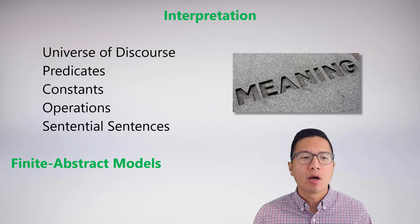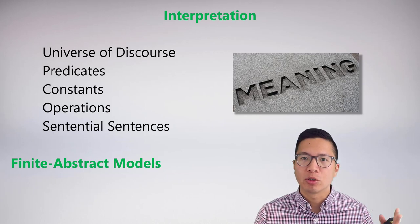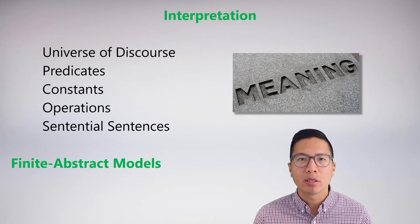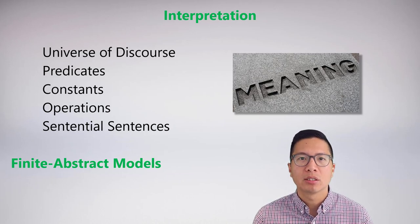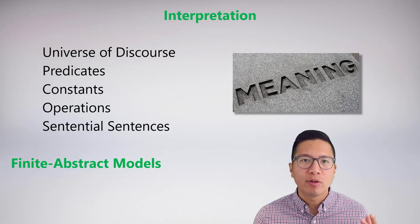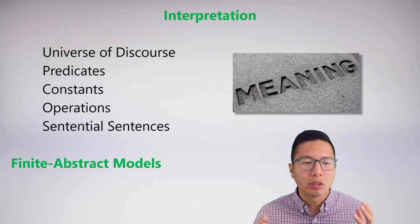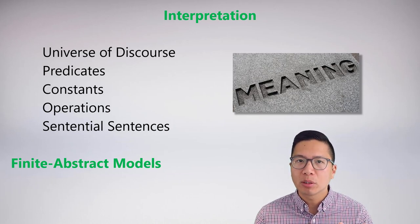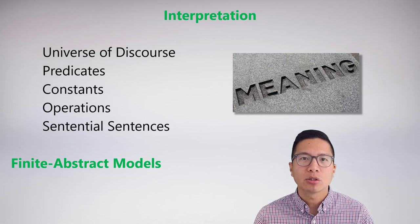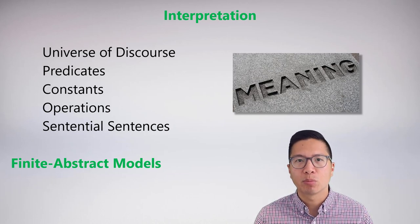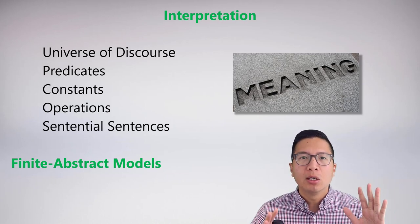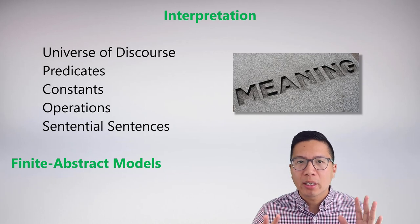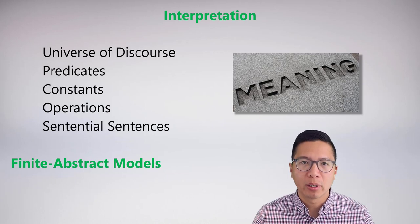We've now learned the skills to build finite abstract models, which are a particular type of interpretation meant to demonstrate semantic properties. Our finite abstract models so far have been limited to single-place predicate logic. In this video, we're going to learn how to expand our skills to generate finite abstract models for multi-place predicate logic and how to do truth-functional expansions in multi-place predicate logic. All the skills are the same — they just require a little more bookkeeping so we can respect the relationships in our multi-place predicates.